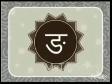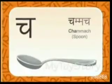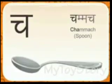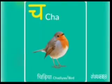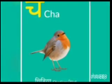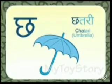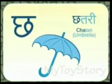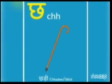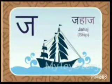ङ — ङ खाली। च से चमच — चमच मतलब Spoon. च से चिड़िया — चिड़िया मतलब Bird. छ से छतरी — छतरी मतलब Umbrella. छ से छड़ी — छड़ी मतलब Stick.